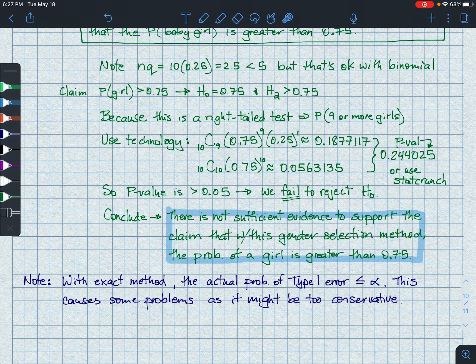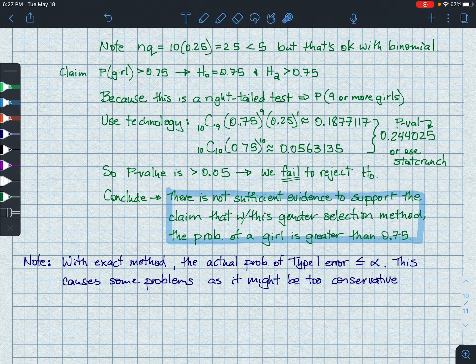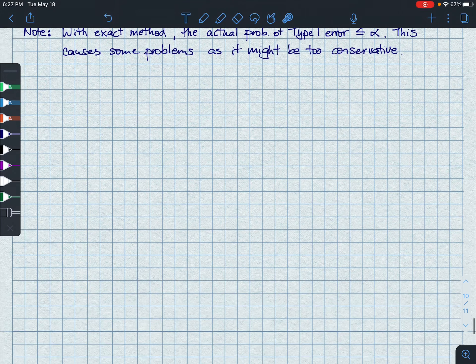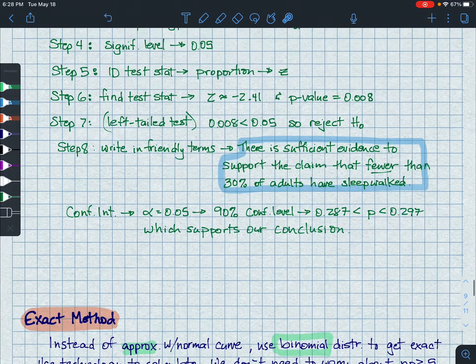One caution is that the binomial probability distribution is actually too conservative. And so sometimes our type 1 errors, which on the good side, is less than or equal to our alpha. Sometimes it's too good. And it restricts too many of our examples. So the book talks about techniques. We're not going to go into that of how to mitigate those issues, those errors that occur.